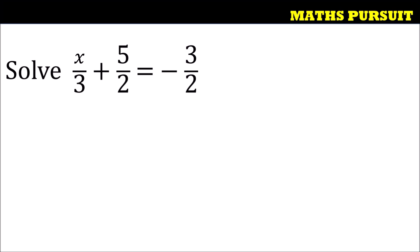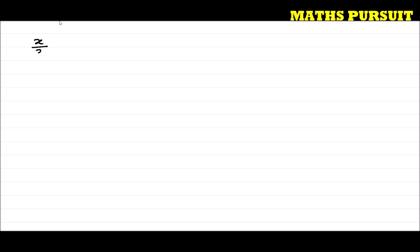The given question is: solve x upon 3 plus 5 upon 2 is equal to minus 3 upon 2. Solving this type of linear equation is very simple and easy. We call it a linear equation because the power of x is 1. For that reason we call these expressions linear expressions.